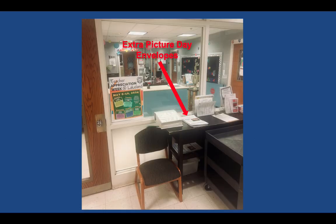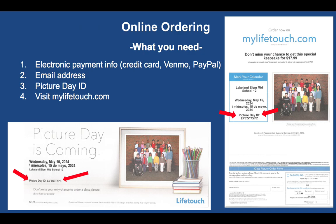We have extra paper envelopes on the black table — the important document holder in front of the office — so you can grab one from there. For example, in the bottom left corner here, if you got this flyer, it's blown up to be bigger, but that's what the flyer looks like. You can't order anything from that — you can use the picture day ID — but on the right side is what the envelope looks like, so if you need one of those, you can grab that.